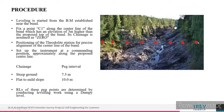First, establish the temporary benchmark. You have a permanent benchmark at Muktinaga Temple. Start fly leveling from there to locate the temporary benchmark near your site. Then fix your instrument at a place where all points are visible.